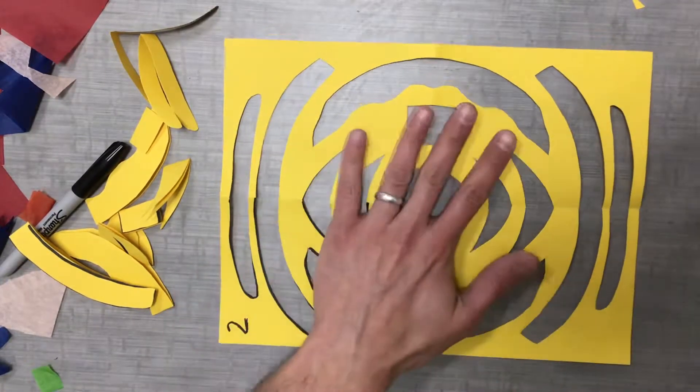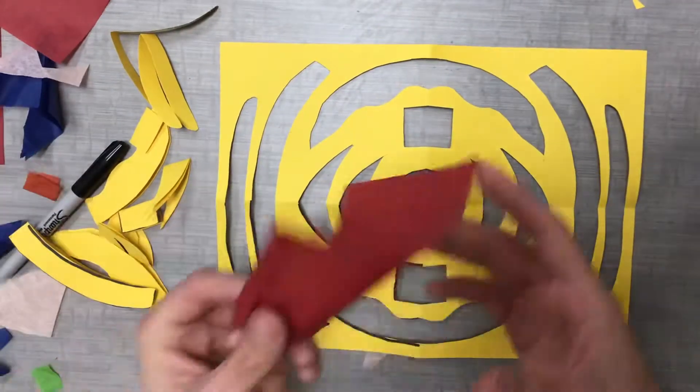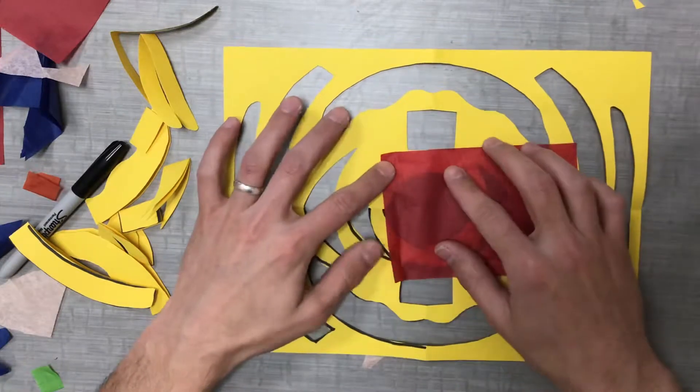Now that I have this all cut out, I'm going to flatten it down and we're going to glue tissue paper to the holes.